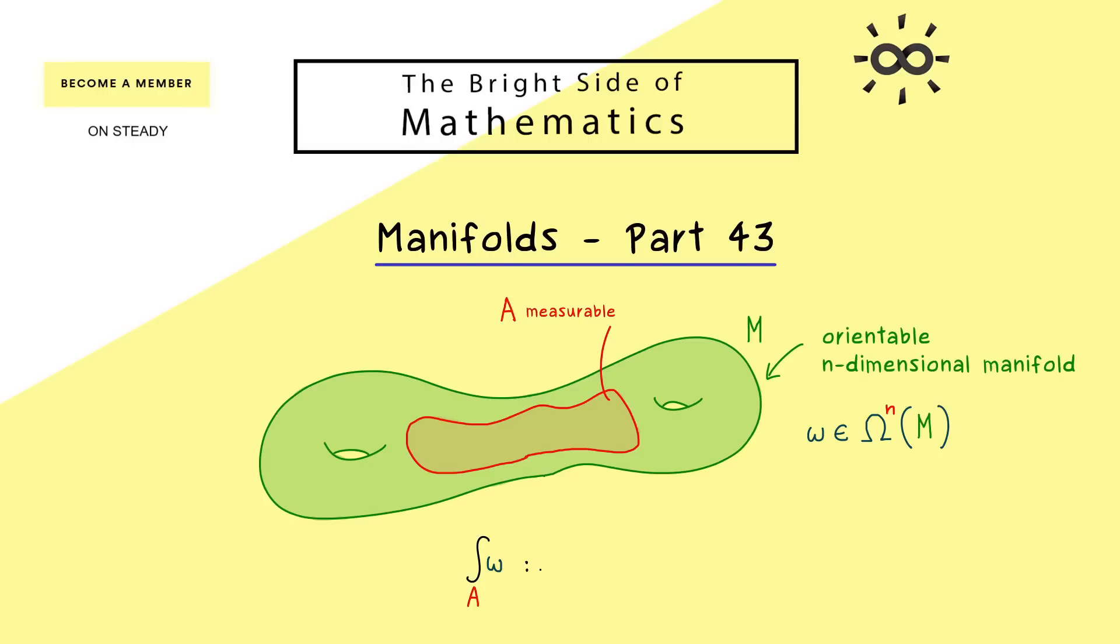And as you might remember, it worked by decomposing the set A into smaller parts. And these parts are simply called A1, A2 and so on. And then we just have to consider a whole sum of integrals in the end.